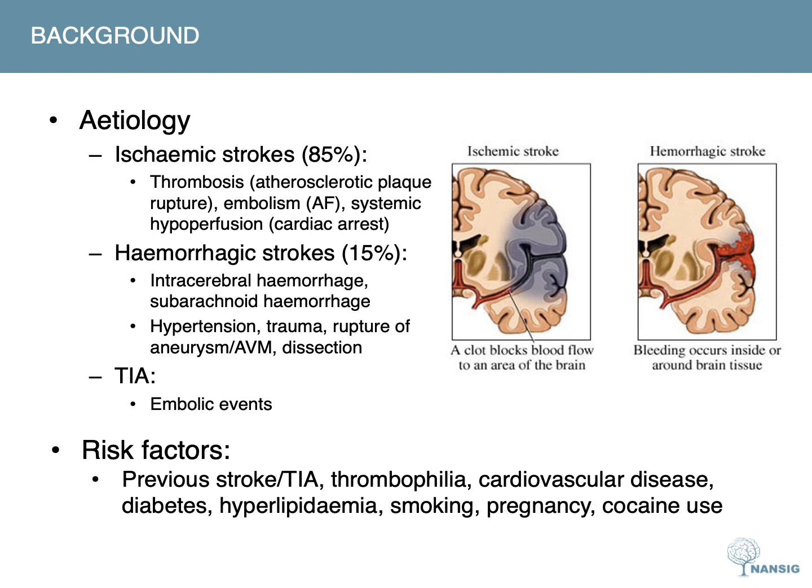On the other hand, hemorrhagic strokes are caused by rupture of a blood vessel or abnormal vascular structure within the brain, such as an aneurysm or arteriovenous malformation, and account for around 15% of cases. There are two subtypes: intracerebral hemorrhage and subarachnoid hemorrhage. The most common cause is uncontrolled hypertension. Other causes include trauma, rupture of an aneurysm or arteriovenous malformation, and arterial dissection.